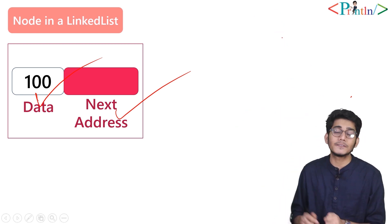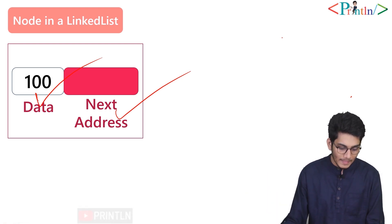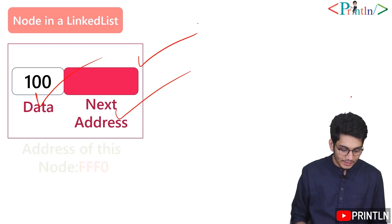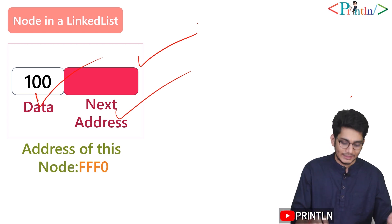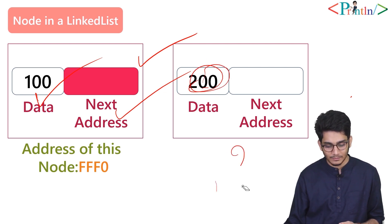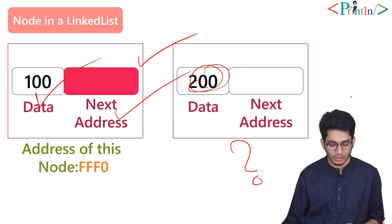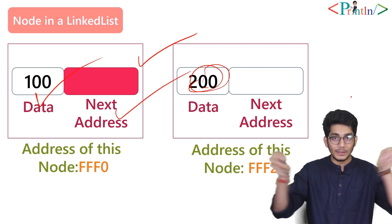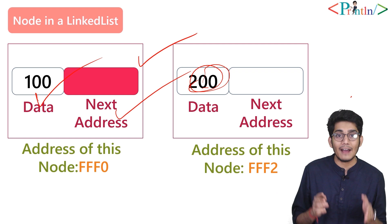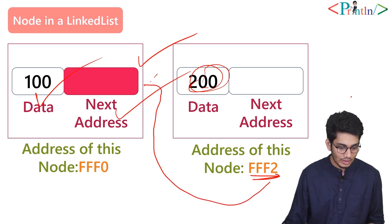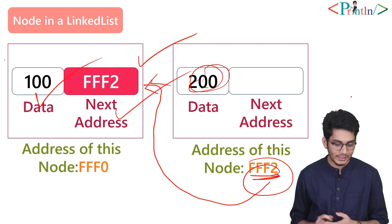We'll clarify the code in the next video; for now let's clear the concept. When we create a node it has its own memory address — let's say fff0. If we allocate another node with data 200, that node has its own address, say fff2. To link these two nodes, we store fff2 in the next address portion of the first node.